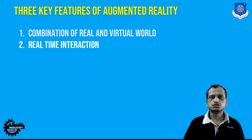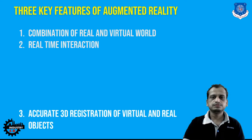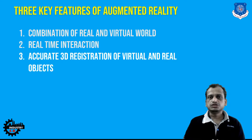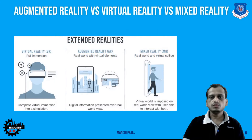The second feature is real-time interaction. With the movement of the head and hands, information was updated in real time — that kind of real-time interaction is possible within augmented reality. The third feature is accurate 3D registration — the virtual objects and real objects must align in 3D space, and this alignment is accurate in augmented reality.